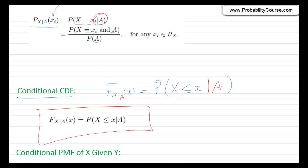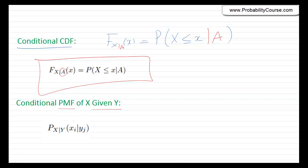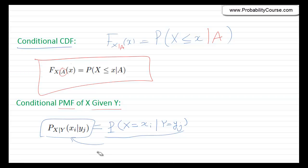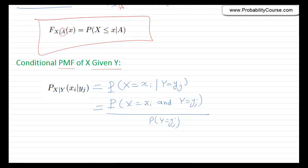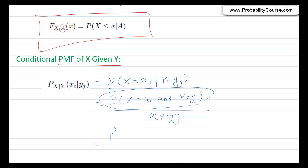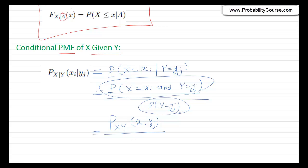This event A could be in terms of another random variable Y. For example, we can talk about the conditional PMF of X given Y. P_{X|Y}(x_i | y_j) is the probability that X equals x_i given that Y equals y_j. Using the formula for conditional probability, this equals the joint PMF P_{XY}(x_i, y_j) divided by the marginal PMF of Y, P_Y(y_j).